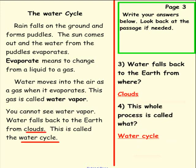Here is what we have as an answer. Question 3: Water falls back to the Earth from where? From the clouds, as illustrated here. Question 4: This whole process is called what? Water cycle. As you can see in this last paragraph. If your answers match ours, that is marvelous. Way to go! Super!